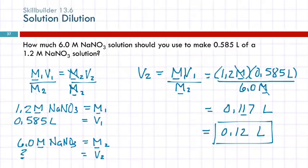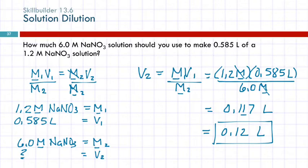Going back to a previous example: notice that here we have a molarity of sodium nitrate, and the compound isn't changing — it's still sodium nitrate. That's what tells you it's a dilution problem, not stoichiometry. So again, do not use the dilution equation for stoichiometry.